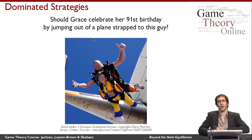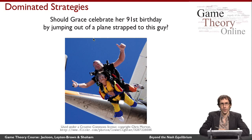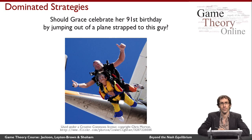First, I want to talk about a solution concept called iterated removal of dominated strategies. I want to illustrate this by the example of Grace, shown in this picture here, who decided to jump out of a plane to celebrate her 91st birthday. I want to think about a game between Grace and the guy that she chose to strap herself to, and in particular his decision of whether to pack the parachute safely or not, and her decision about whether to jump out of the plane or not.